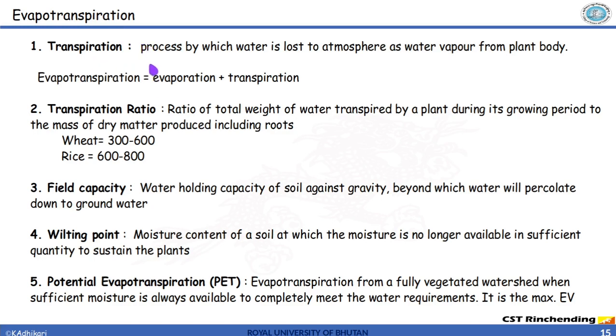That is transpiration, as I have already explained, it is the actual water that has been released by the plant and evaporation and transpiration combined is known as evapotranspiration. Now, transpiration ratio is the ratio of total weight of water transpired by the plant during its growing period to the mass of dry matter produced including roots.